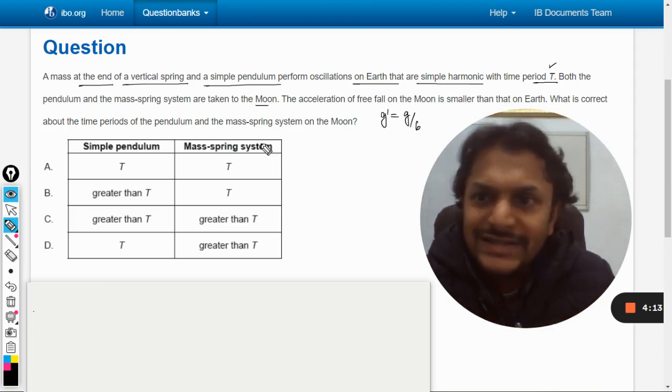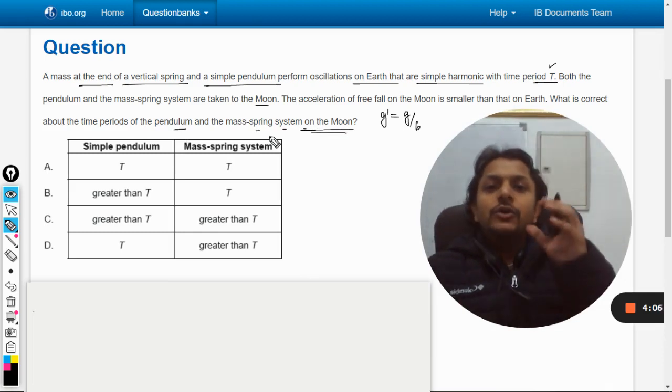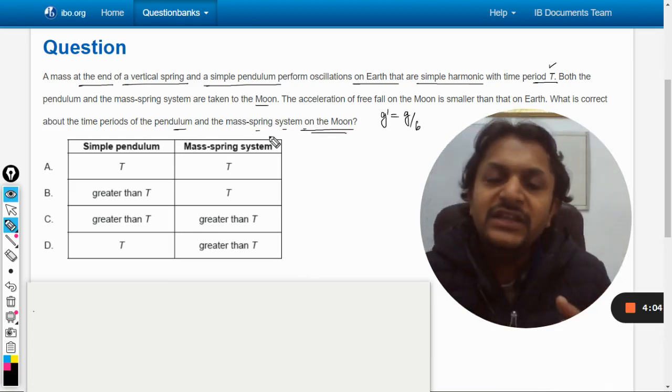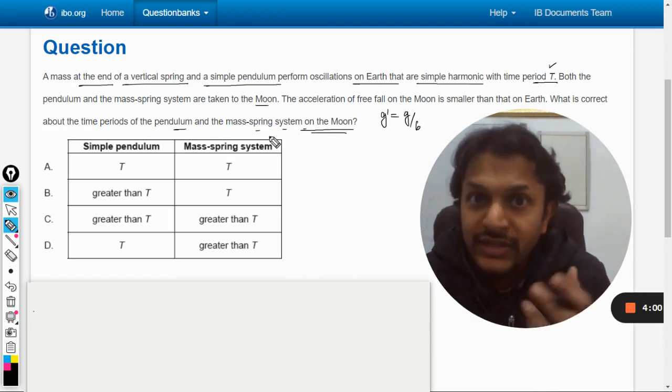Okay, what is correct about the pendulum time period and the mass-spring system on the moon? So what will be the time period for both of the systems on the moon? That is what we are supposed to find out.